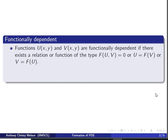Two functions u and v are functionally dependent if there exists a relation or function of the type f(u, v) = 0, or u = f(v), or v = f(u). In such a scenario, the Jacobian of u and v with respect to x and y will be 0.